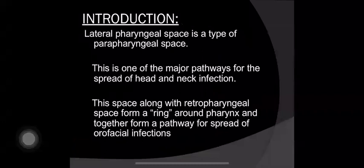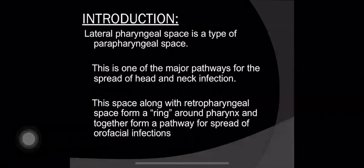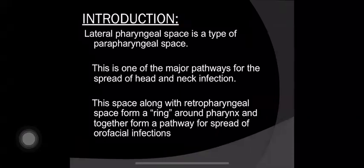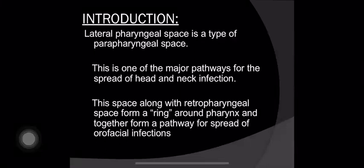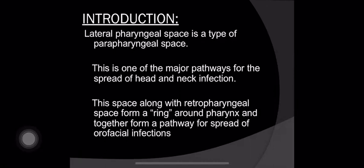What is a lateral pharyngeal space? It is a type of parapharyngeal space. What is a parapharyngeal space? It is also called pharyngomaxillary space and is located in the upper neck. This space is one of the major pathways for the spread of head and neck infection. The lateral pharyngeal space along with retropharyngeal space forms a ring around the pharynx, forming a pathway for the spread of orofacial infections.